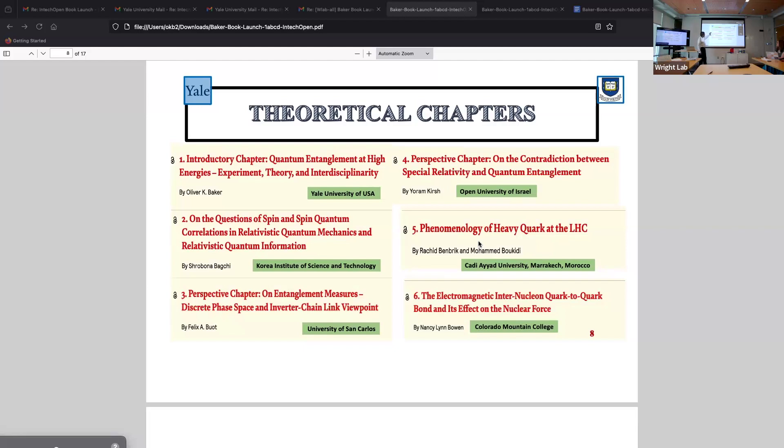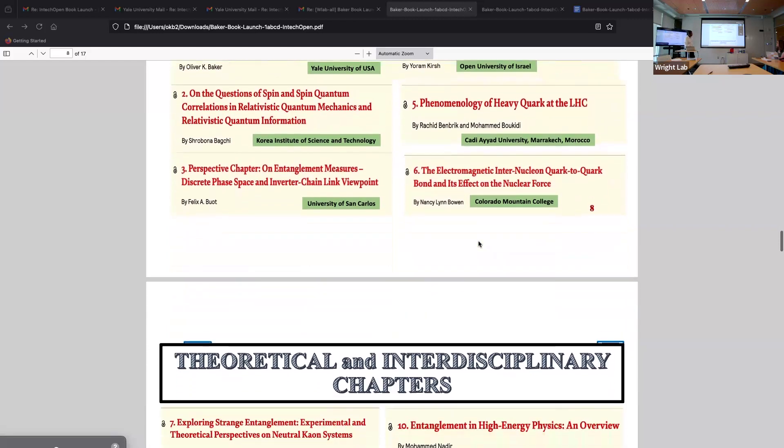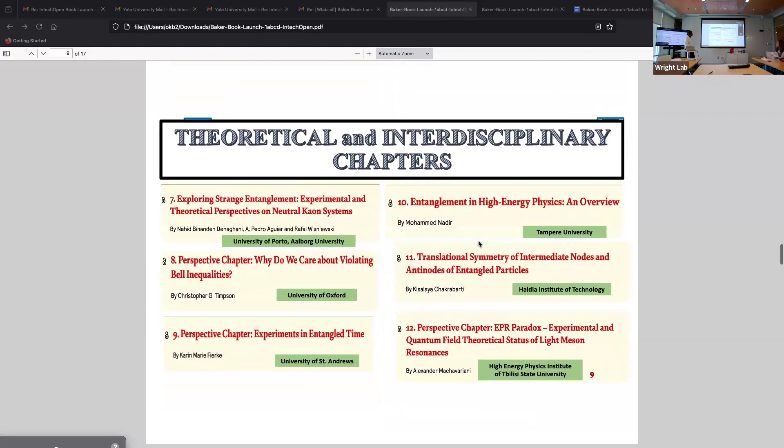And this one, why is there a contradiction between special relativity and quantum entanglement, where you can't have causality has to be held. And yet, for some reason, it looks like it may not be held in some conditions. So this now, this is what I wanted also to emphasize.